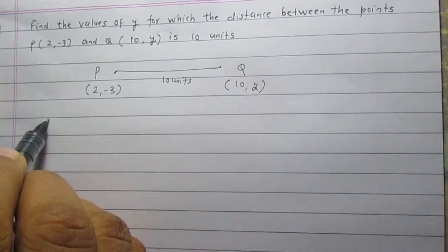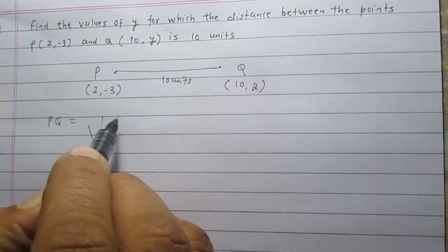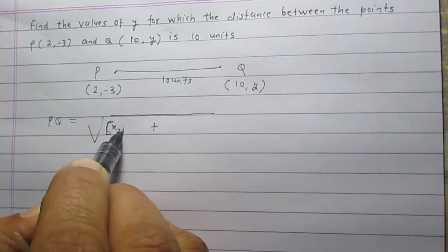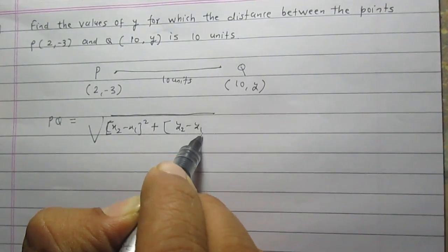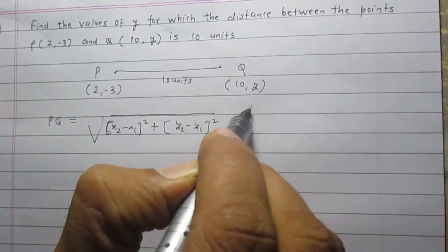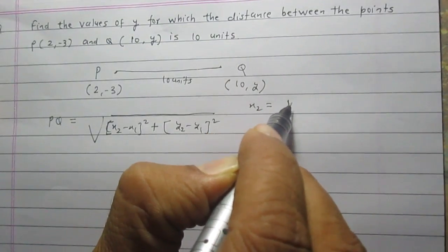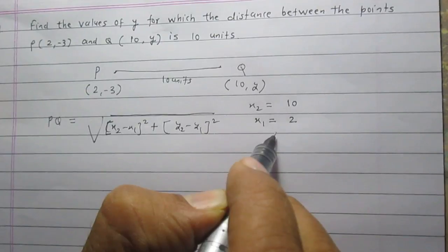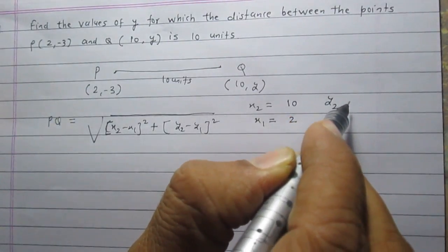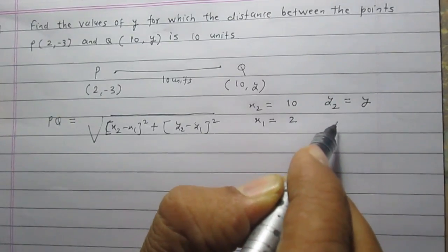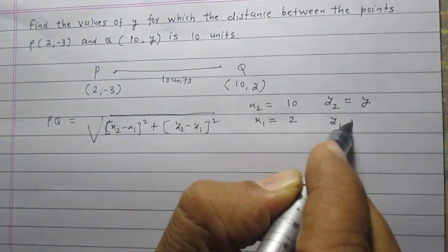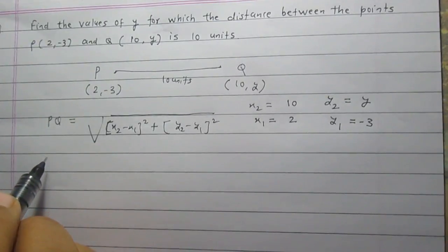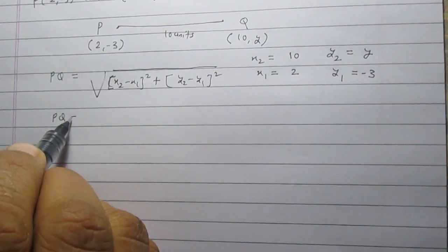According to the distance formula, the distance PQ is equal to the square root of (x2 - x1)² + (y2 - y1)², where x2 is the x-coordinate of point Q, equal to 10; x1 is the x-coordinate of point P, equal to 2; y2 is the y-coordinate of point Q, equal to y; and y1 is the y-coordinate of point P.